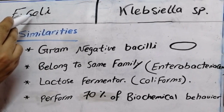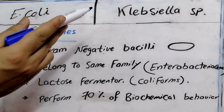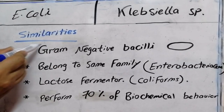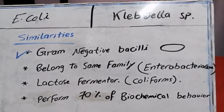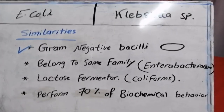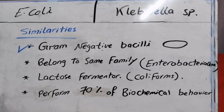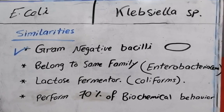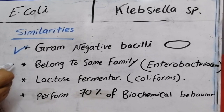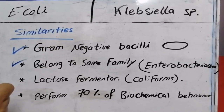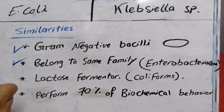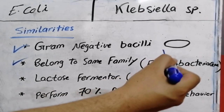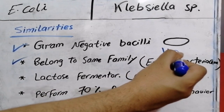Both E. coli and Klebsiella are gram-negative bacilli, which show a pink color under the microscope. Also, they belong to the same family: the Enterobacteriaceae family, the large group of gram-negative bacilli.